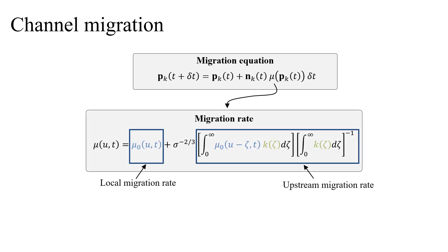We then compute channel migration for every channel in the network. Sampling points move toward the normal direction by a certain amount called the migration rate. The migration rate depends on the local and upstream curvature. This introduces a lag between the maximum curvature point and the maximum migration point, which conforms to real river observations.